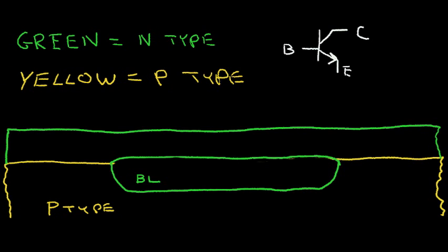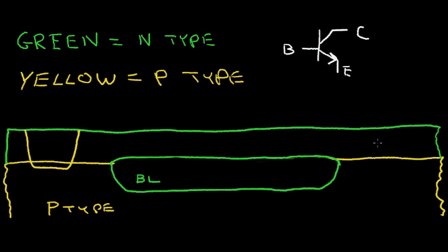The next step is to diffuse in a P-type material here and also into this region at the same time. What this does is it forms an N-type tub, isolating this region of N-epi from the other N-epi region.